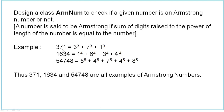For example, 371 — you separate the digits and the length of the number is 3, so each digit is raised to the power 3: 3³ + 7³ + 1³, and when you add them you get 371 itself. Similarly, 1634 is a 4-digit number so each digit is raised to the power 4. And 54748 is a 5-digit number: 5⁵ + 4⁵ + 7⁵ + 4⁵ + 8⁵. So 371, 1634, and 54748 are all examples of Armstrong numbers.